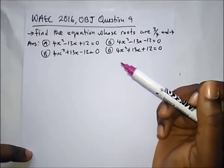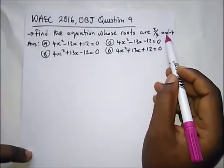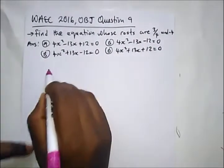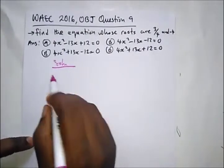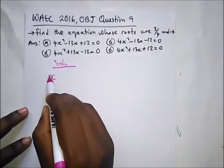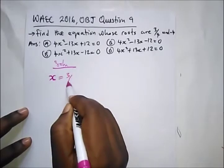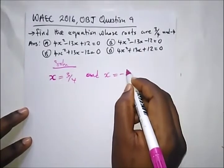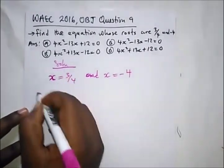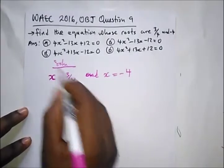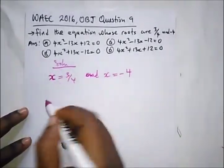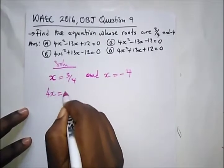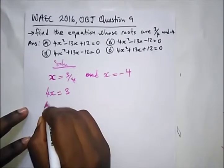OBJ question 9: find the equation whose roots are 3/4 and minus 4. They've given us the values of X, so X equals 3/4 or X equals minus 4. All we need to do is form these as equations equal to zero. Multiplying through, we have 4X equals 3, then bringing 3 to this side gives us 4X minus 3 equals 0.